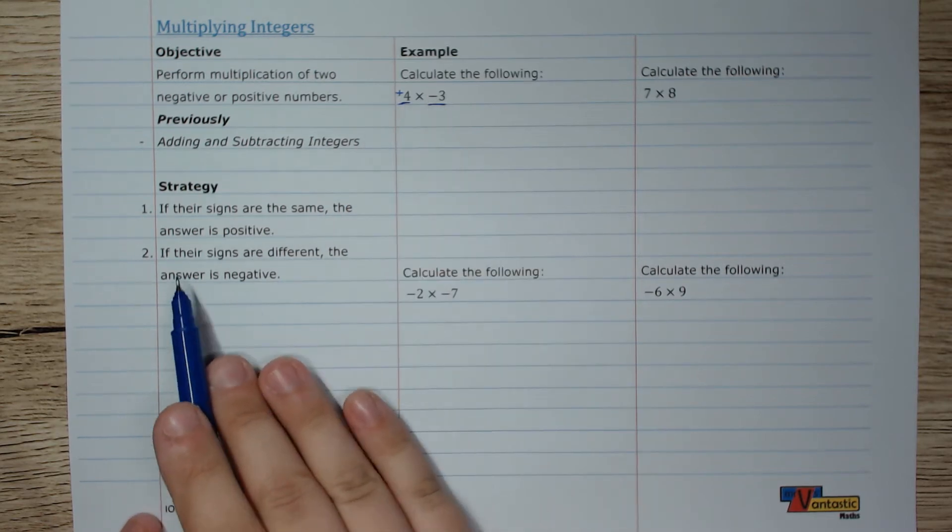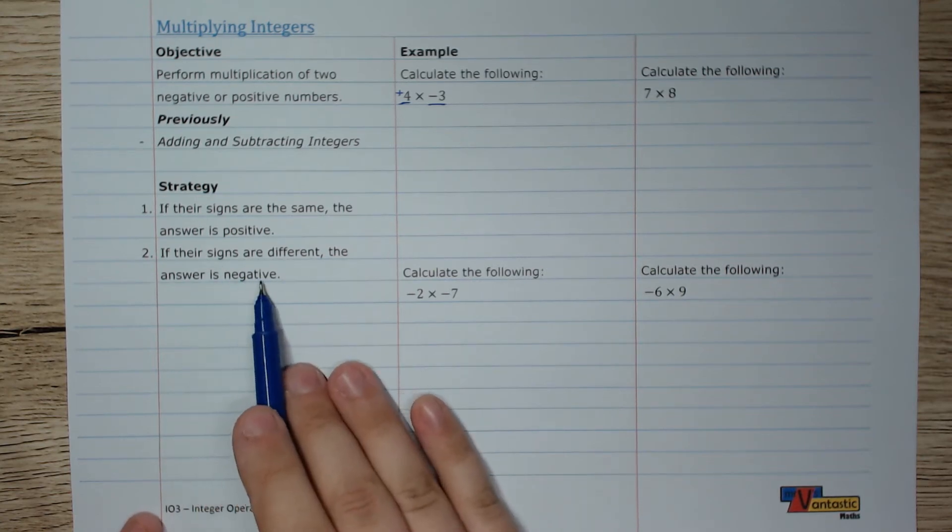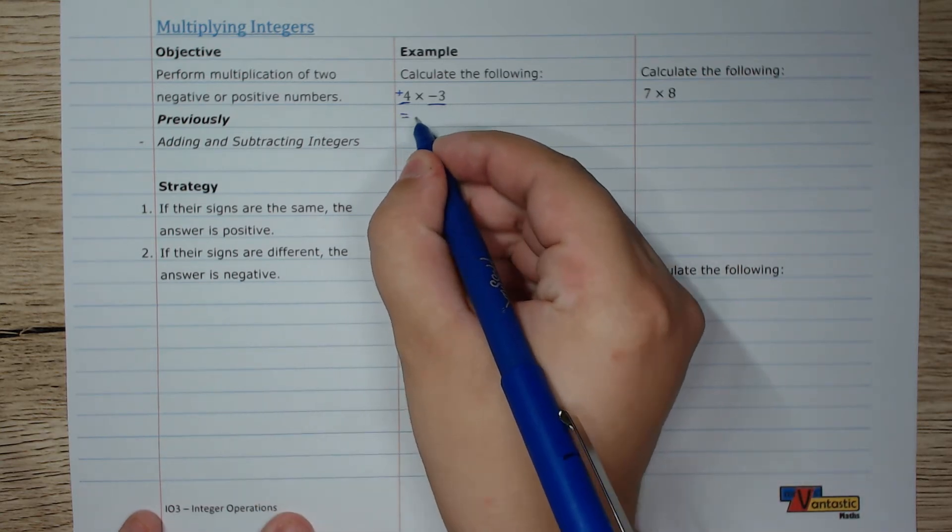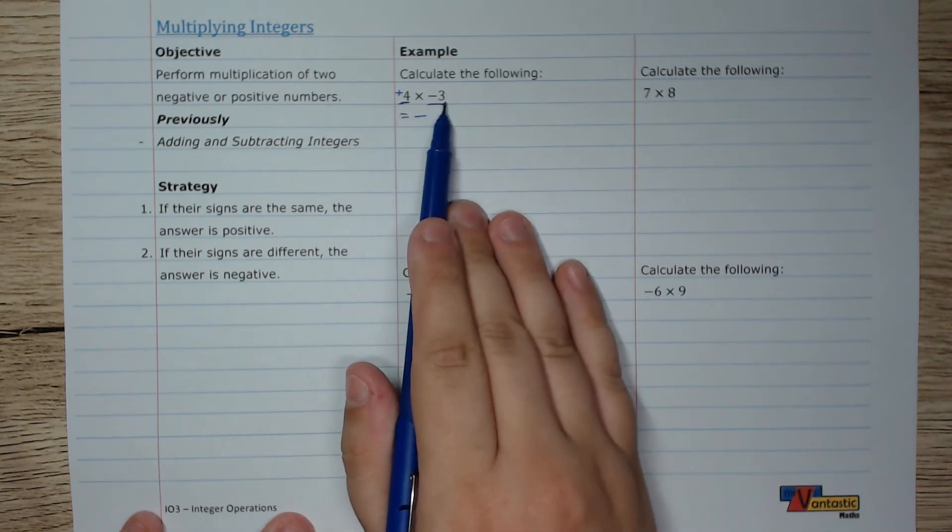Our rules tell us that if the signs are different, if they're opposite to each other, then the answer is going to be negative. So in this case, our answer is going to be a negative number. Which number? We can multiply our 4 and our 3 to figure that out.